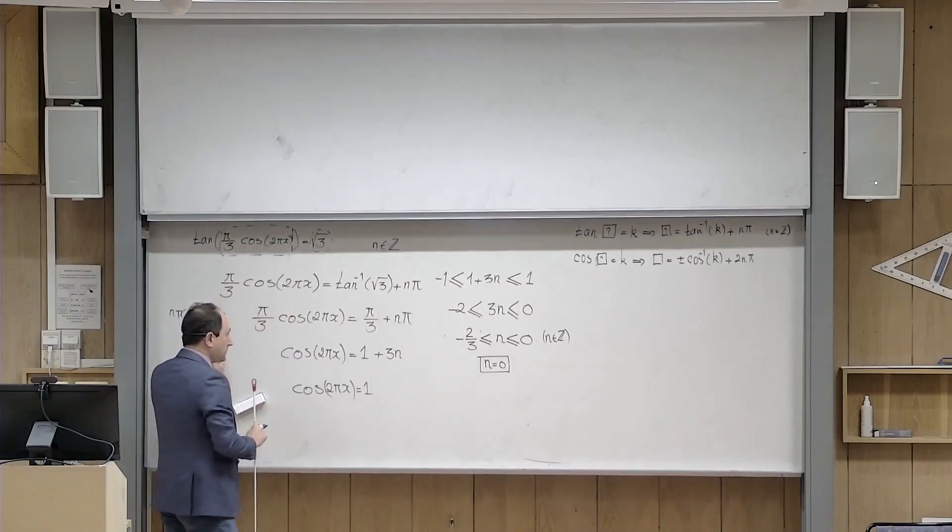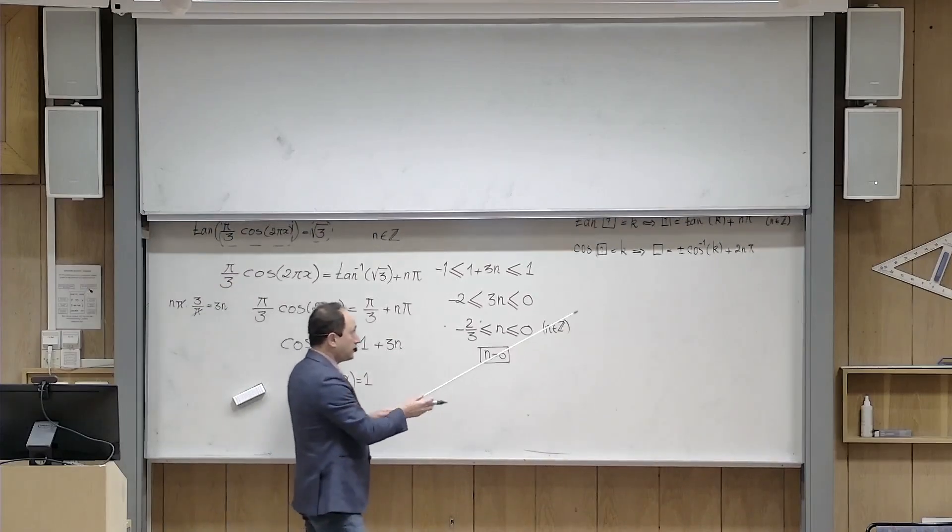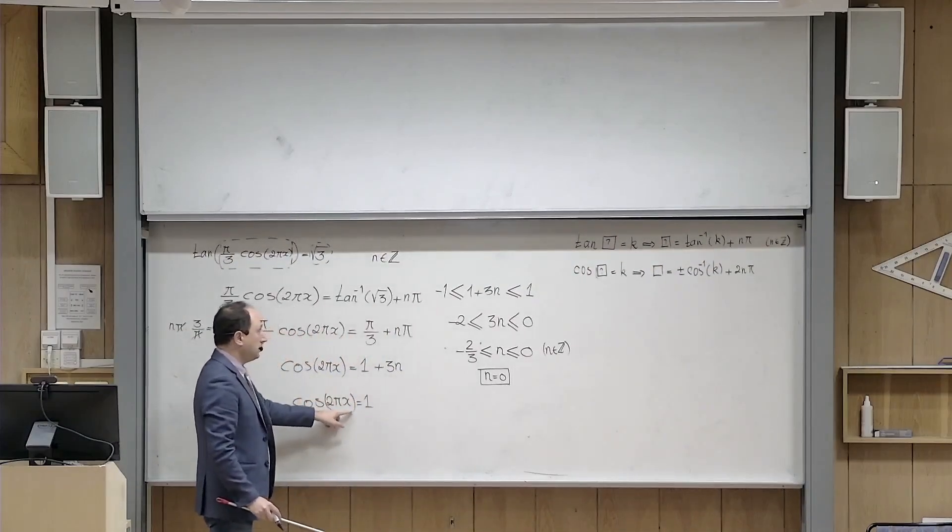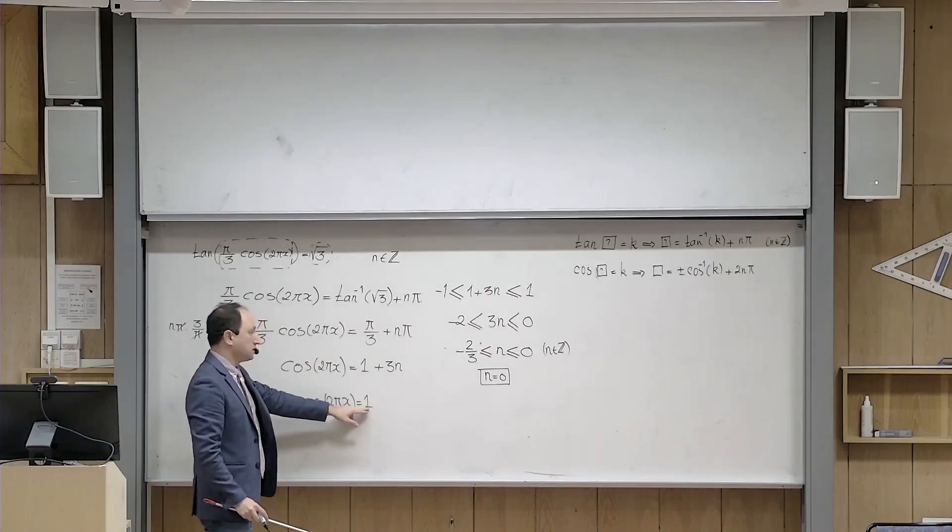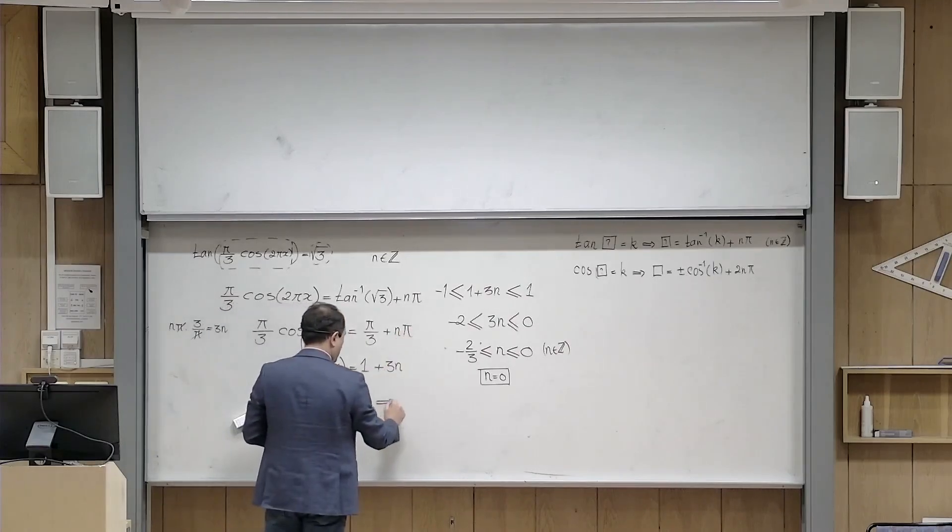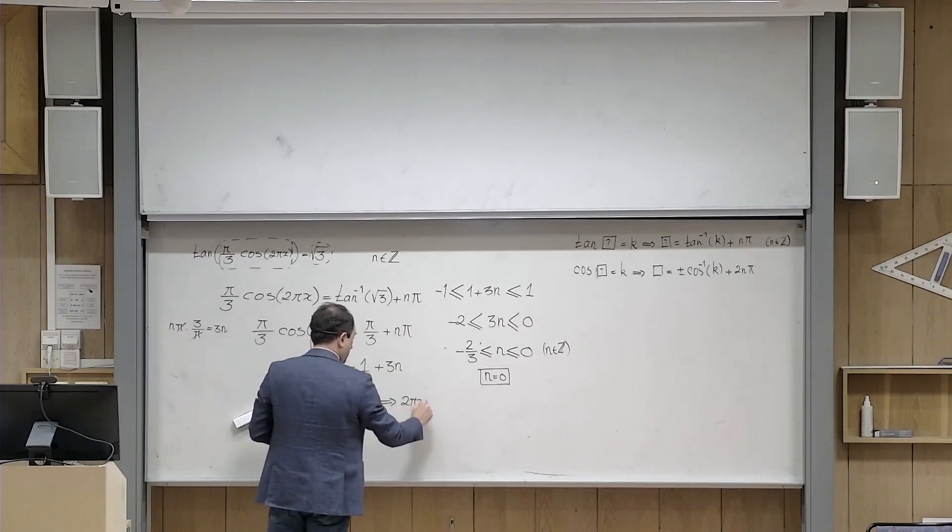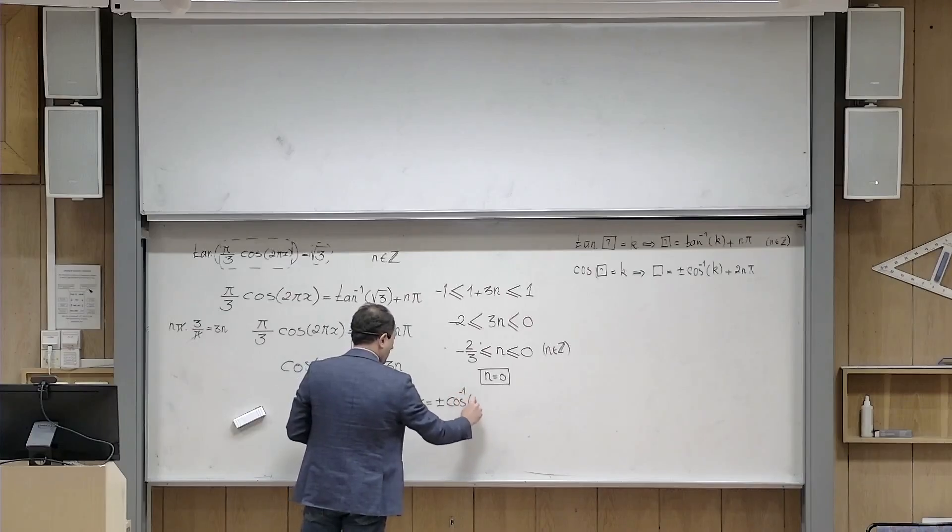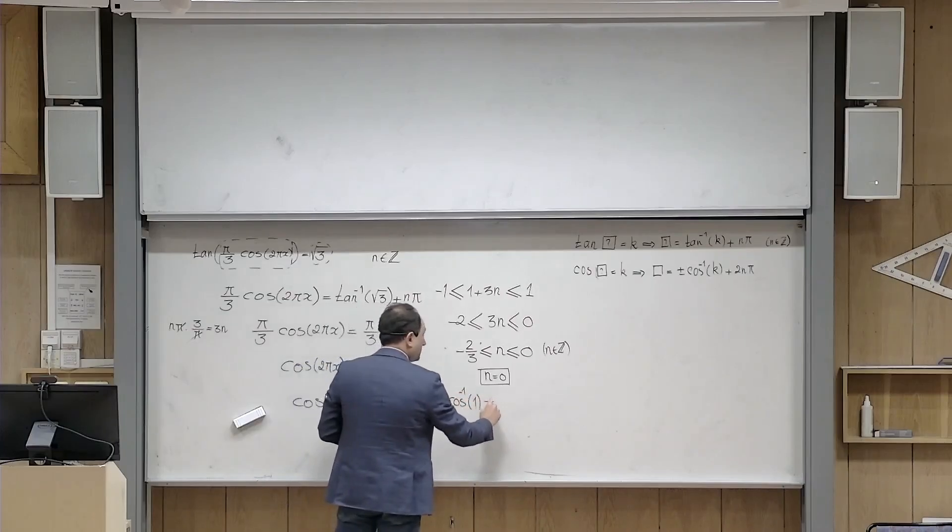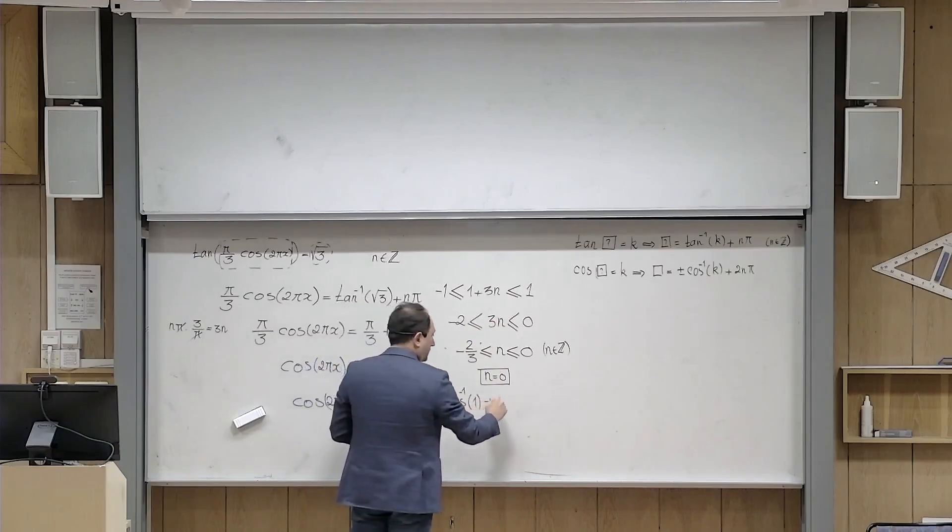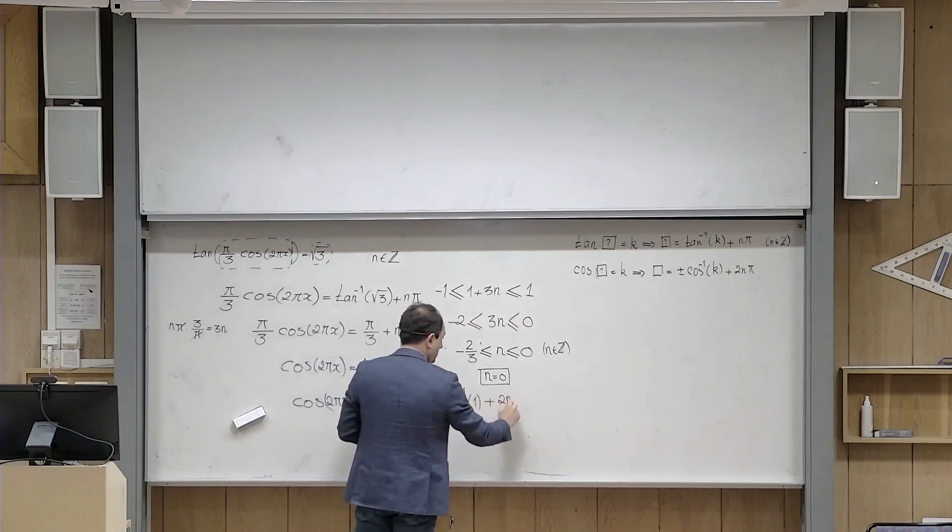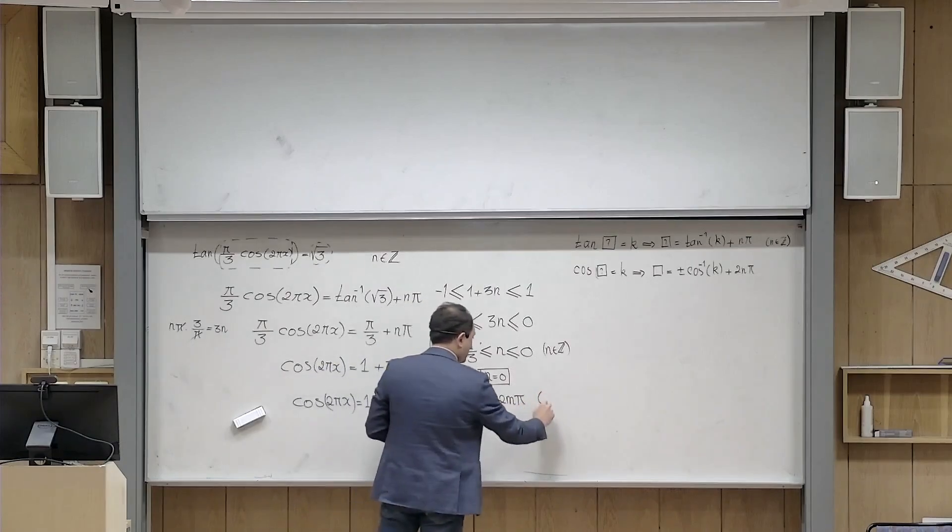Then what happens, I can use the second formula here. And I give the role of the box now to this guy, and then the role of k to this 1. Then I will write 2 pi x is equal to plus or minus cosine inverse of 1 plus an even multiple of pi. Because I have already reserved letter n here, let me change my letter to m. Here, m belongs to z.